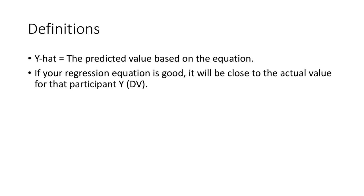Y-hat is our predicted value — we've actually been talking about this all year in data screening. Given the number of projects finished and naps taken, we'll have some predicted value of happiness or satisfaction. If our regression equation is any good, the predicted satisfaction level will be close to the actual satisfaction I recorded for that day. We always want predicted scores and actual scores to be close. Like forecasting for the stock market, politics, or sports — you're trying to predict how things will go, and you always want your prediction to be close or you're not doing very well.